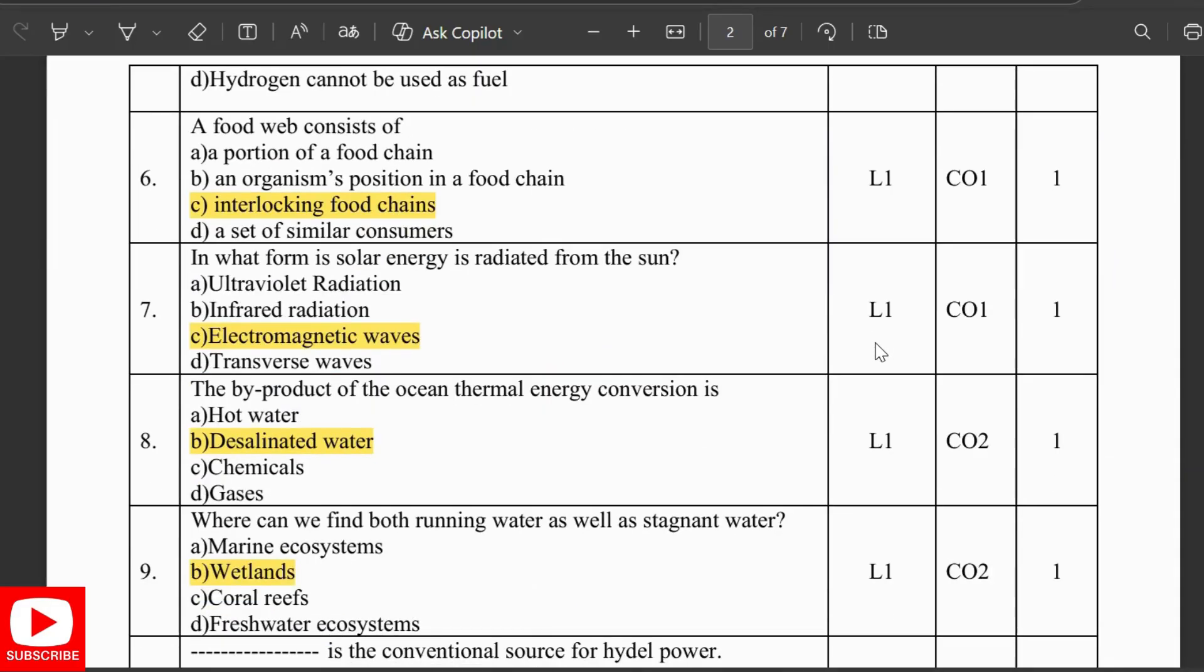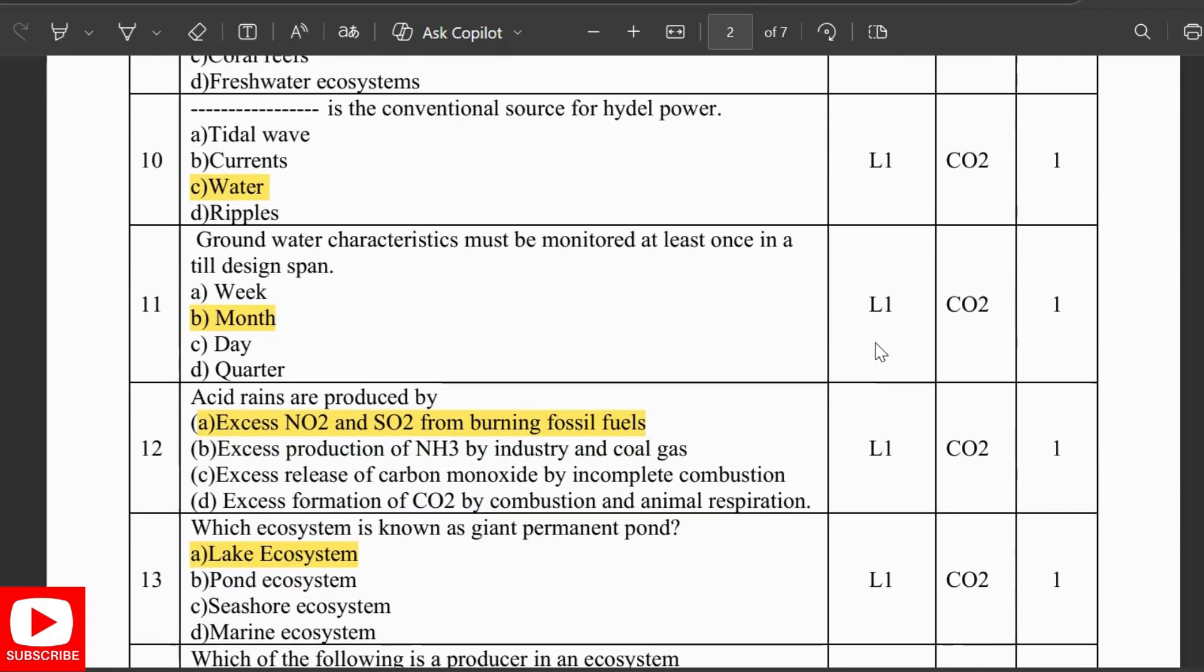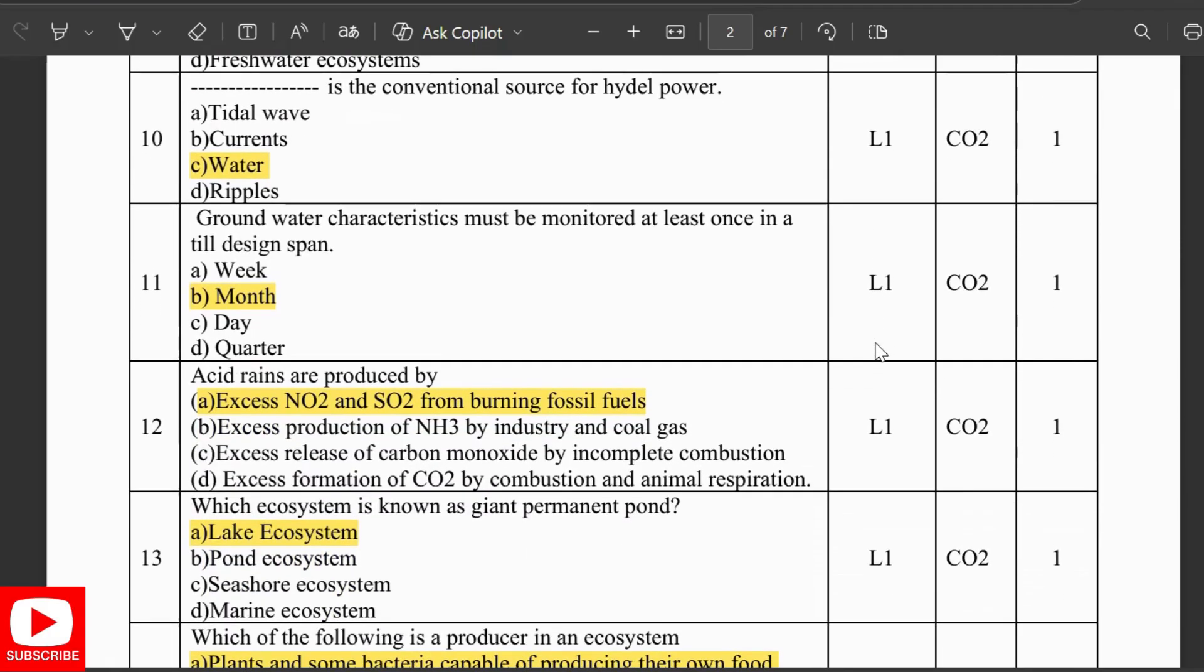In what form is solar energy radiated from the sun? It is electromagnetic waves. The byproduct of ocean thermal energy conversion is desalinated water. Where can we find both running water as well as stagnant water? In the wetlands.